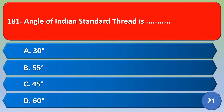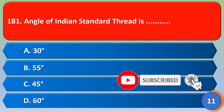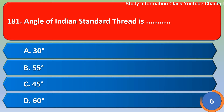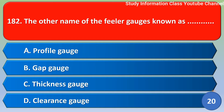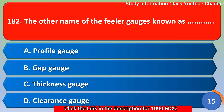Namaste. The angle of Indian Standard thread is: option A 30 degree, option B 55 degree, option C 45 degree, option D 60 degree. The correct answer is option D — 60 degree. The angle of Indian Standard thread is 60 degree.